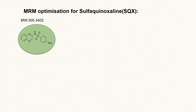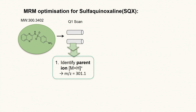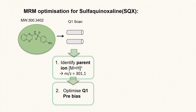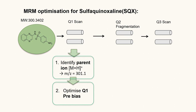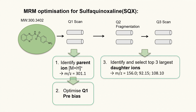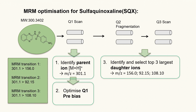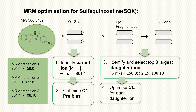The molecular weight of SQX is 300.3402. The parent ion of SQX with a mass-to-charge ratio of 301.1 was identified through Q1 scan. Subsequently, the parent ion underwent fragmentation in Q2 to produce daughter ions, and three daughter ions with the highest intensity were selected from Q3 scan to form three MRM transitions.